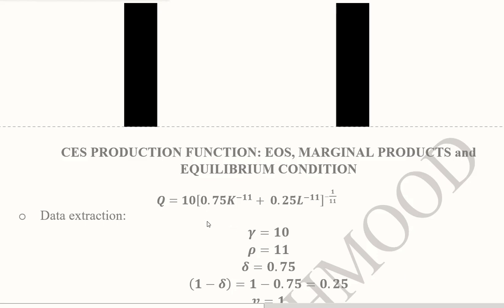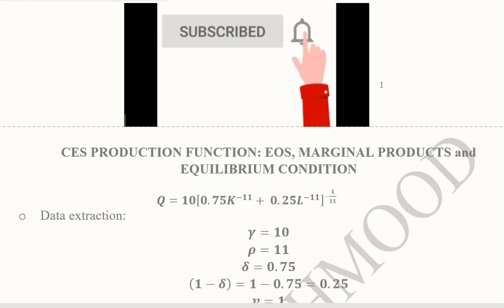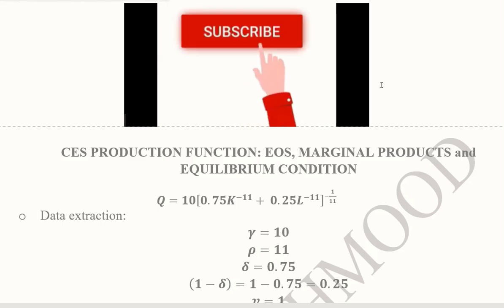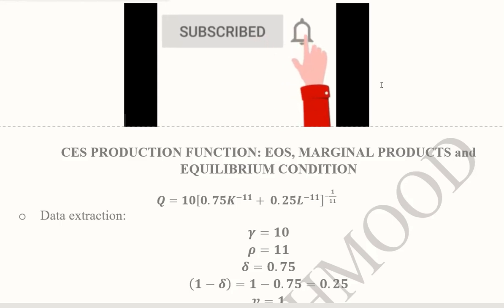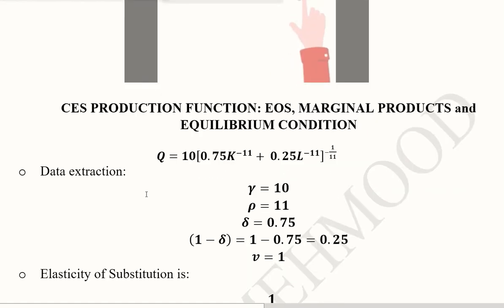Hi, this is CES production function. It's an American example where we will calculate the elasticity of substitution, find the marginal products, and establish the condition for the producer's equilibrium. Before we go ahead, I request you to subscribe to this channel so that it grows and more people could benefit. Also press the bell icon so that you get the latest videos without any delay.